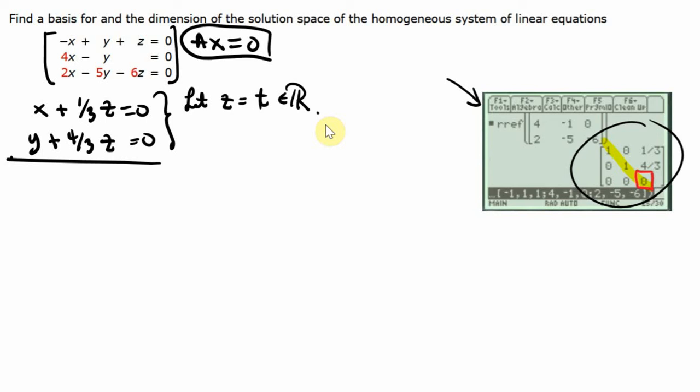Remember from chapter one, whenever you have the reduction of a system with a row of all zeros in a square matrix, you will have a dependent system. That simply means X and Y would depend on Z.